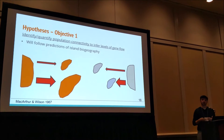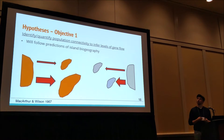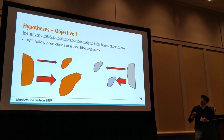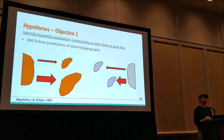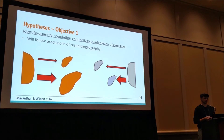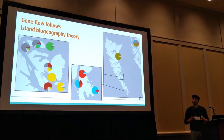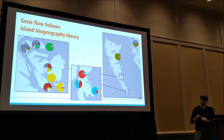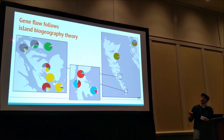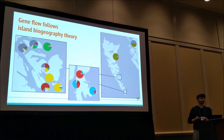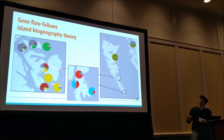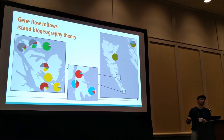For our first objective, looking at population connectivity among islands, we largely predicted this was going to follow the rules of island biogeography theory — that islands larger and more proximate to a source population are going to have higher rates of colonization and connectivity than islands that are smaller and more distant. What we found was fairly close to what island biogeography theory predicts. Islands that are close together share a high amount of genetic diversity, as shown in these admixture plots displaying mean admixture coefficients for each population. Islands that are larger show shared genetic diversity with all other islands around them.